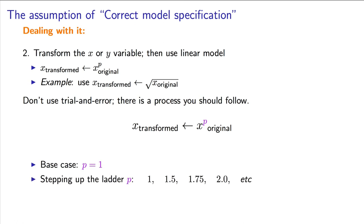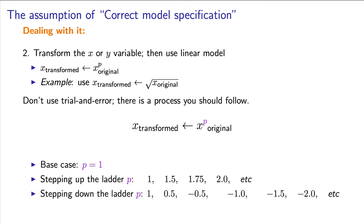As we go to these higher values, the transformation is more aggressive. We can also step down the ladder: a value of p equal to 0.5 corresponds to a square root, but we can go further — 0.25. We can even go to negative values of p: minus 0.5, minus 1 which corresponds to inverting x, minus 1.5, and minus 2 which corresponds to the inverted square of x. These also become more aggressive as you go further down the ladder. The log transformation is also commonly used, and it fits into this ladder quite nicely. It approximates the point where p is equal to 0 in terms of the severity of the log transformation.